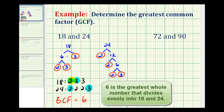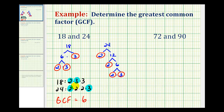And if you knew your multiplication tables really well, you could probably tell that from the very beginning. But this is a nice foolproof method for determining the greatest common factor. Now let's determine the greatest common factor of 72 and 90 using the same method. Let's make a factor tree for 72 — we need two numbers that multiply and give us 72, how about 8 times 9.